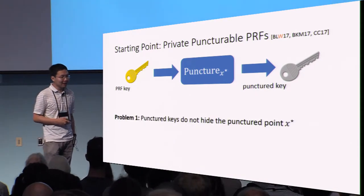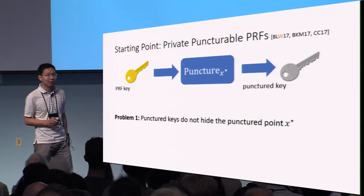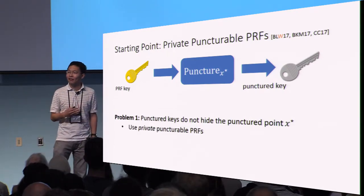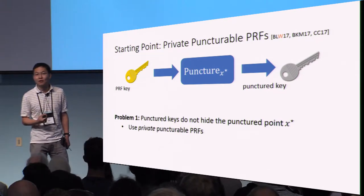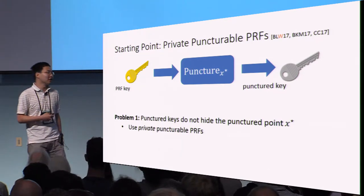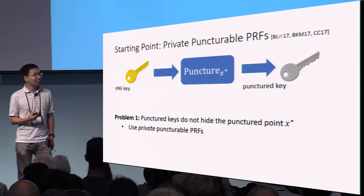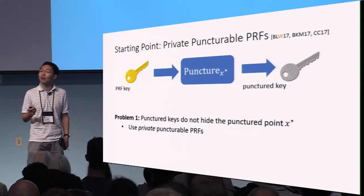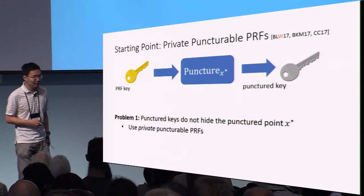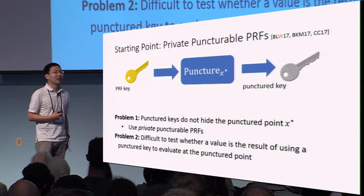If you look at our watermarking schema, the way we verify whether a program is watermarked is to evaluate it at the special point x* and check if it has a precise value. If the puncturing algorithm does not give us flexibility in choosing this precise value, then we are not able to implement this general blueprint. The first problem — that punctured keys do not hide the punctured point — is actually fairly easy to address. Instead of using standard puncturable PRFs, we can use a new notion called private puncturable PRFs introduced by Boneh et al. A private puncturable PRF is the same as a puncturable PRF except the punctured key also hides the punctured point x*.